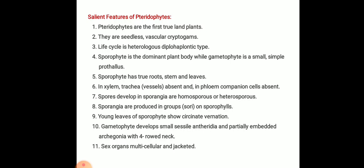The salient features of the pteridophytes: these are the first true land plants; they are seedless vascular cryptogams. The life cycle of the pteridophyte is heterologous diplohaplontic type. The sporophyte is the dominant plant body while the gametophyte is small, simple, and prothallous. The sporophyte of pteridophytes has true roots, stem, and leaves. In the xylem, tracheae (vessels) are absent, and in the phloem, companion cells are absent.